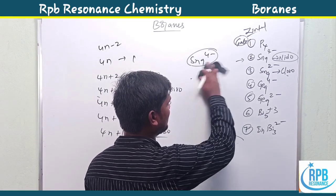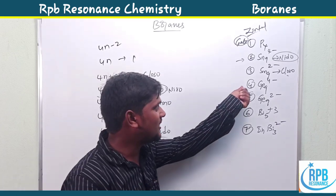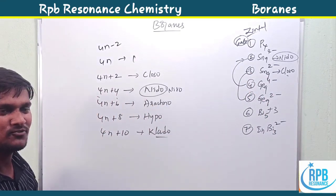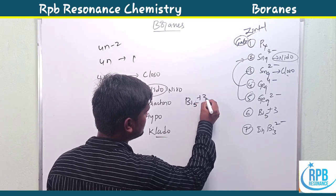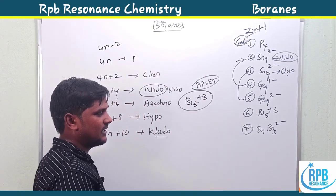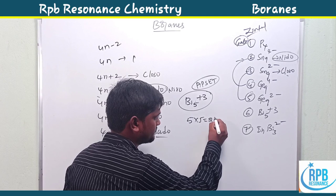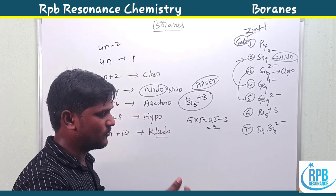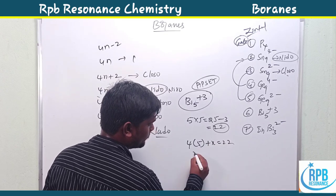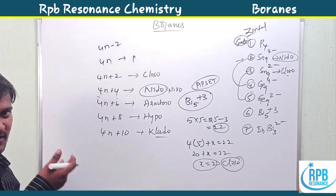Germanium is also a group 4 element (same as carbon/silicon/tin), so Ge9 species follow the same analysis as Sn9. For Bi5³⁺: bismuth is group 5 (5 valence electrons). 5 × 5 = 25 electrons, minus 3 (positive charge) = 22 electrons. 4(5) + x = 22 → 20 + x = 22 → x = 2. So Bi5³⁺ is 4n+2 — closo type. This is an AP SET 2019 question.